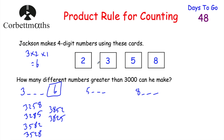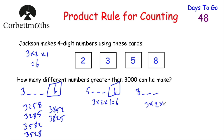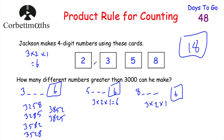Similarly, if 5 is in the front, the remaining three digits can go in any order: 3 × 2 × 1 = 6 possible numbers in the 5,000s. And if 8 is in the front, again 3 × 2 × 1 = 6 possible numbers in the 8,000s. So altogether there are 6 + 6 + 6 = 18 possible numbers greater than 3,000 that Jackson can make using these cards.